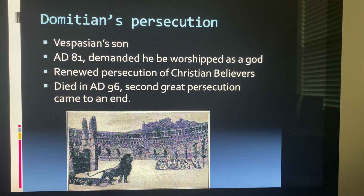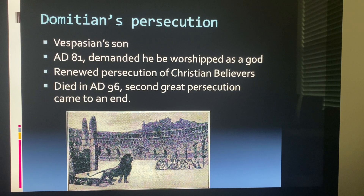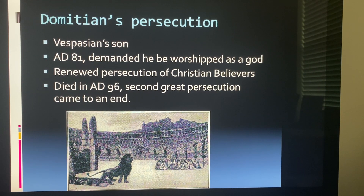Domitian took over in AD 81 and demanded to be worshipped as God. This renewed and intensified the persecution of Christian believers to a greater extent. He died in 96 AD, bringing the second great persecution to an end for a while. Christians were sent to the Colosseum, where lions and gladiators were used against them.